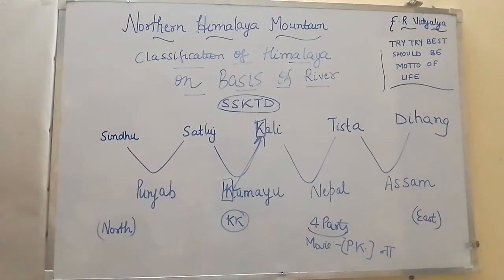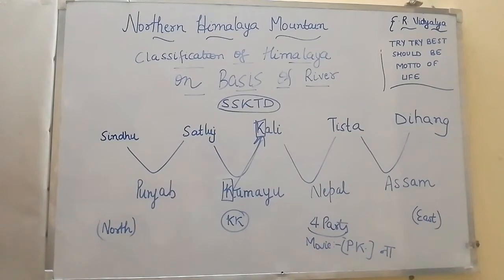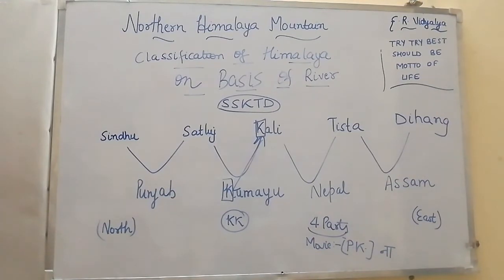Going from west to east, the key rivers and their Himalayan sections are: Sindhu and Sataluj belong to Punjab Himalaya; Kali belongs to Kumayon Himalaya; Tishtha belongs to Nepal Himalaya; and Dihang belongs to Assam Himalaya. The mnemonic S.S.K.T.D. maps directly to Punjab, Punjab, Kumayon, Nepal, and Assam respectively.